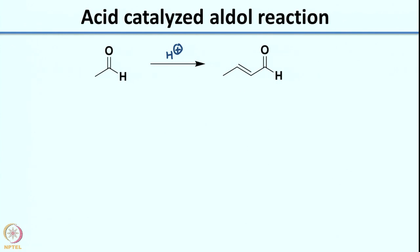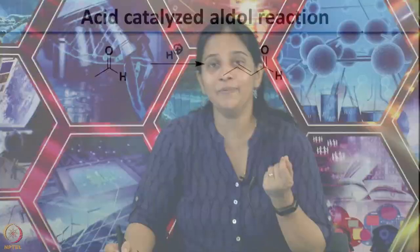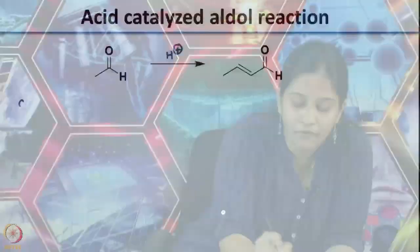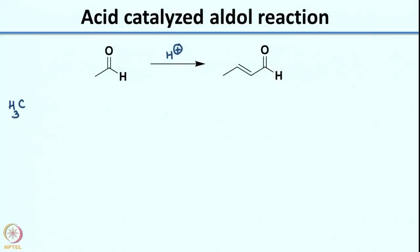In the base-catalyzed reaction the medium was rich in OH⁻; here we are looking at a medium which is rich in H⁺. Obviously you know what your sink will be — in this case it will be H⁺. Now let us look at the source. If I consider again the same molecule, what would be a good electron source here?